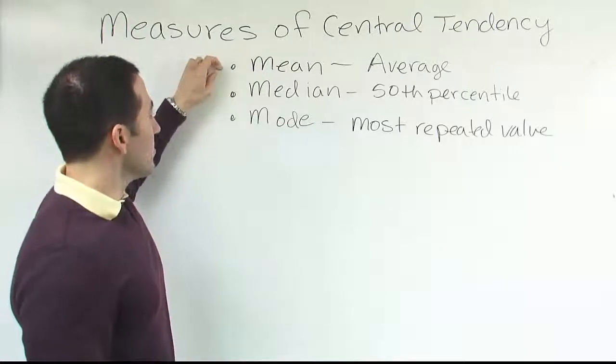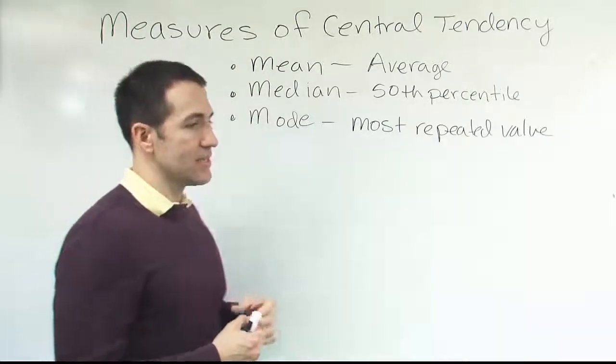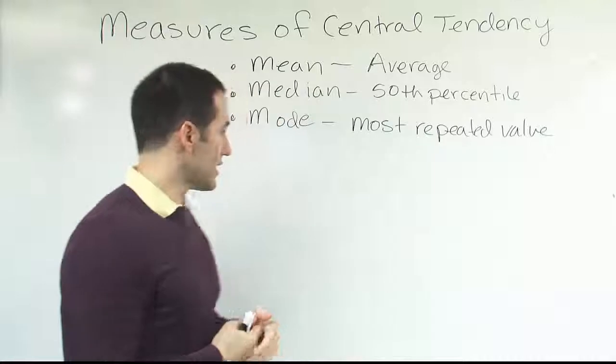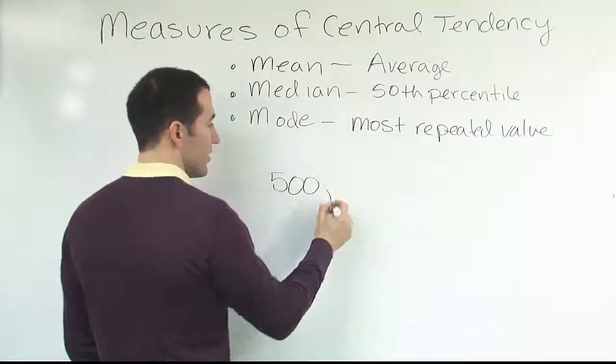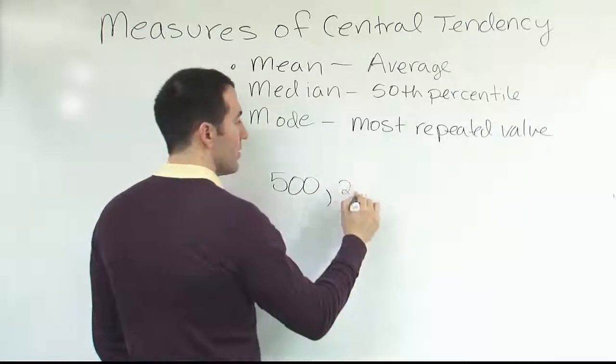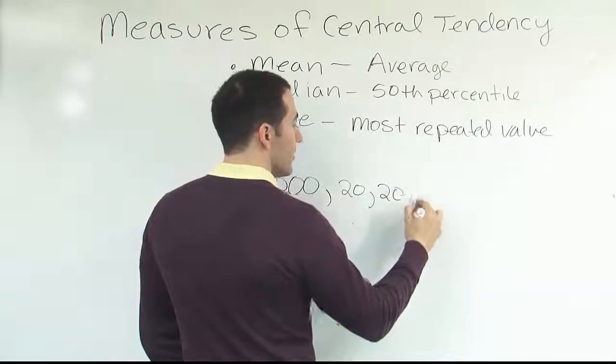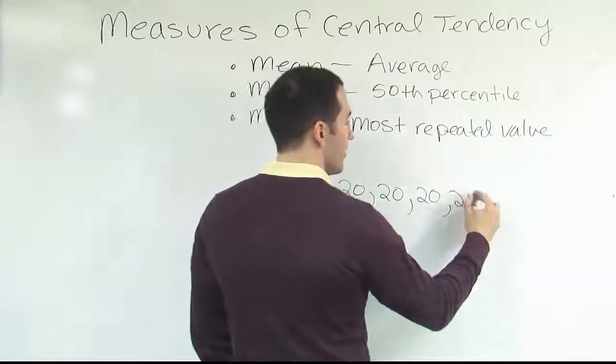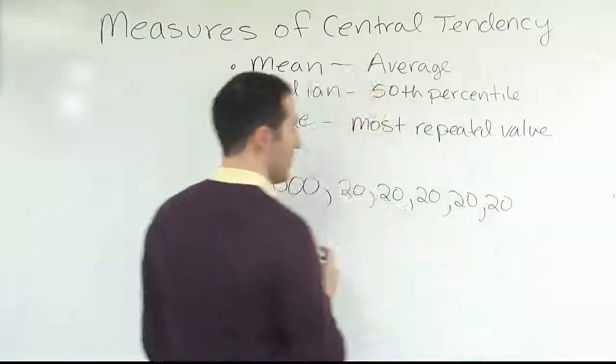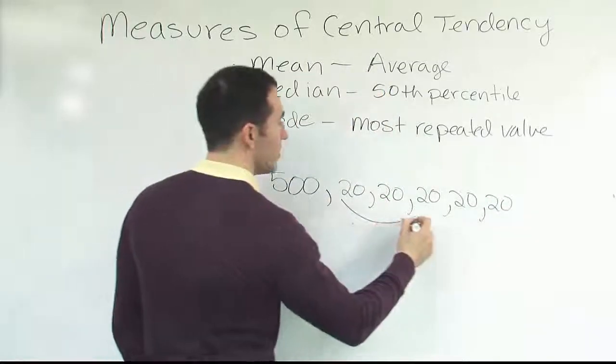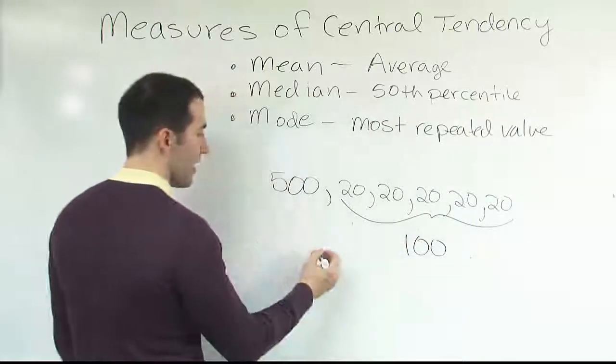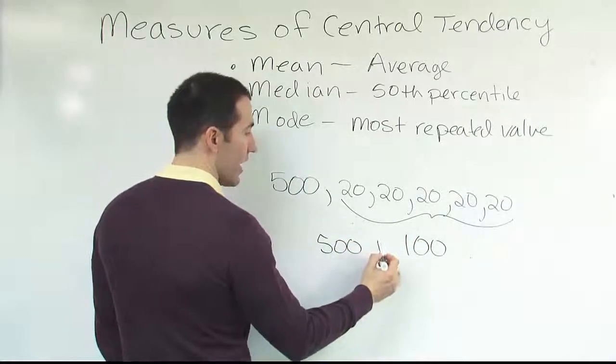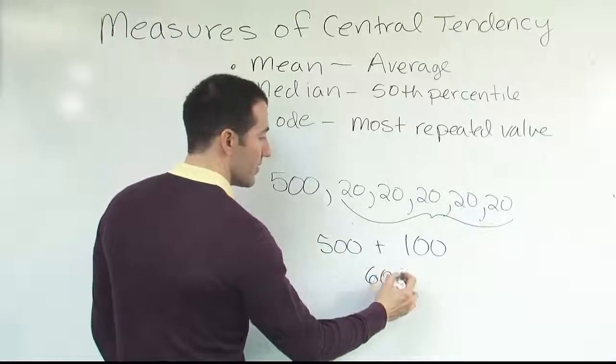When can't we use the mean? Well, sometimes you have an extreme number in the data set, something really large that would really mess up the data set. A quick example, if you have, for example, salaries, say somebody makes $500,000 a year, and then you have five other people that only make $20,000 a year. When you add up these guys' salaries, they only add up to $100,000 a year. This $500,000 a year, if you add them together total, you get $600,000 a year.